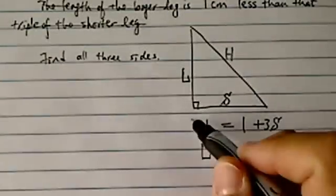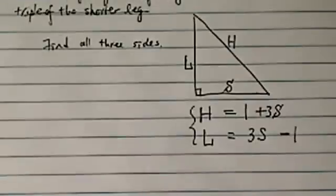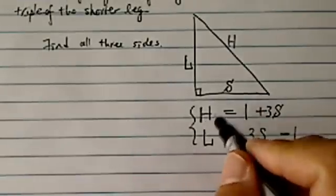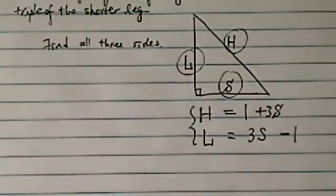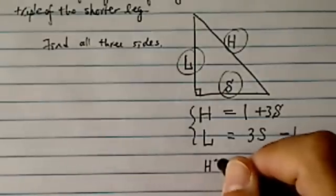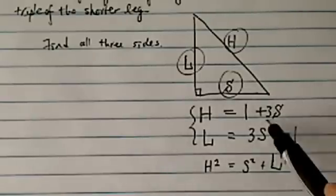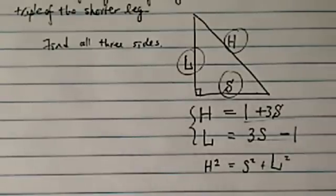Now you notice we have three variables. Obviously we need three equations, otherwise the system cannot be solved. And the last one is H squared equals S squared plus L squared. I don't know about you, I have no interest in squaring those things, they're nasty. However, here's a trick.